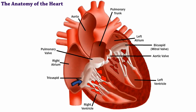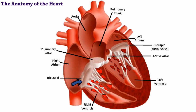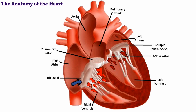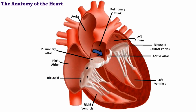When the AV valves close, they prevent blood from flowing back into the atria while the ventricles are contracting. The tricuspid has three flexible cusps, or flaps, and the bicuspid has two.